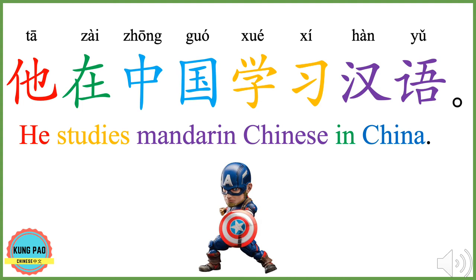他在中国学习汉语。 他 means he or him. 在 means in or at. 中国 means China. 学习 means study. 汉语 means Mandarin Chinese. 他在中国学习汉语 means he studies Mandarin Chinese in China.